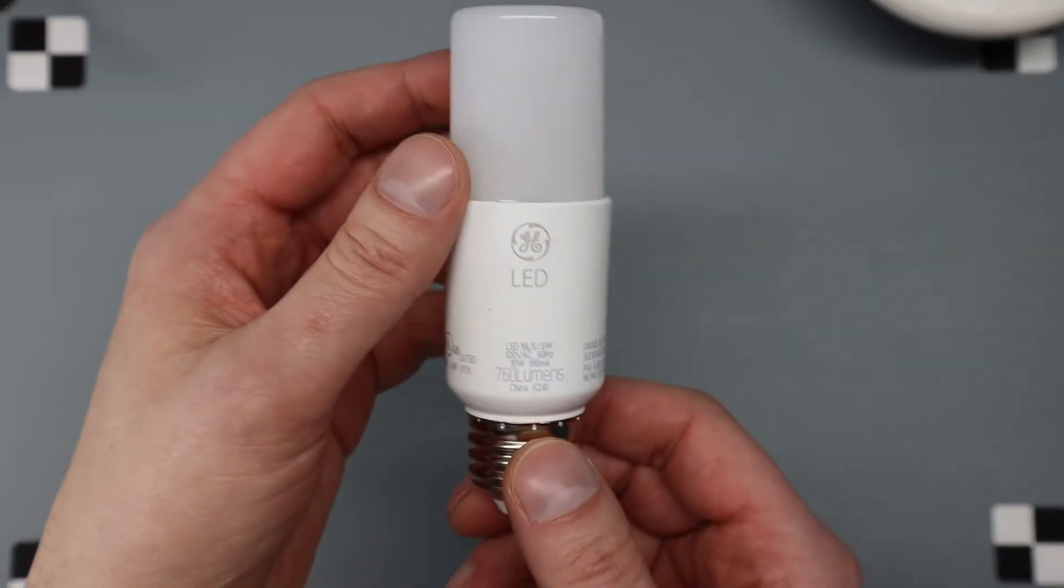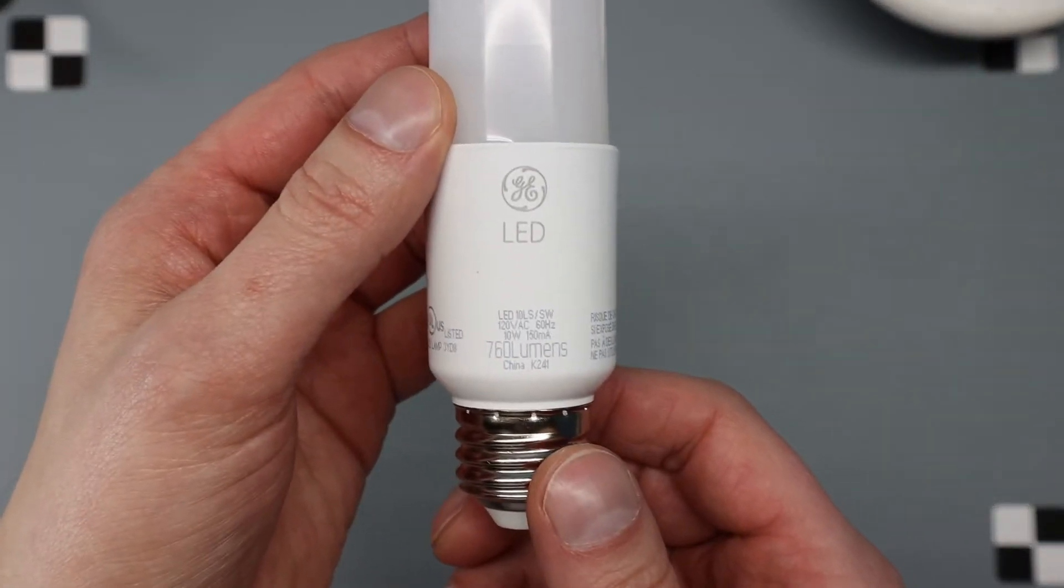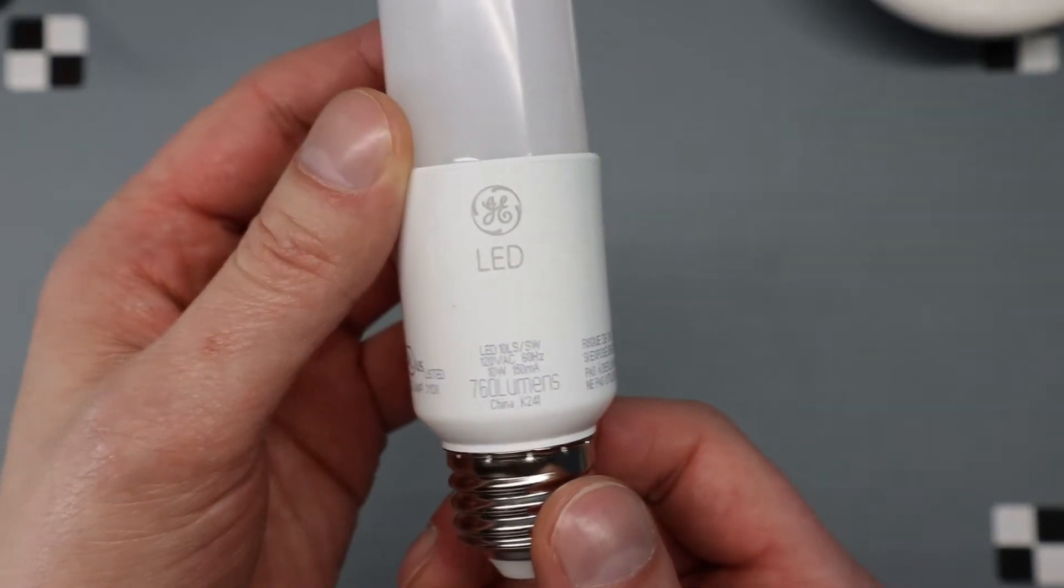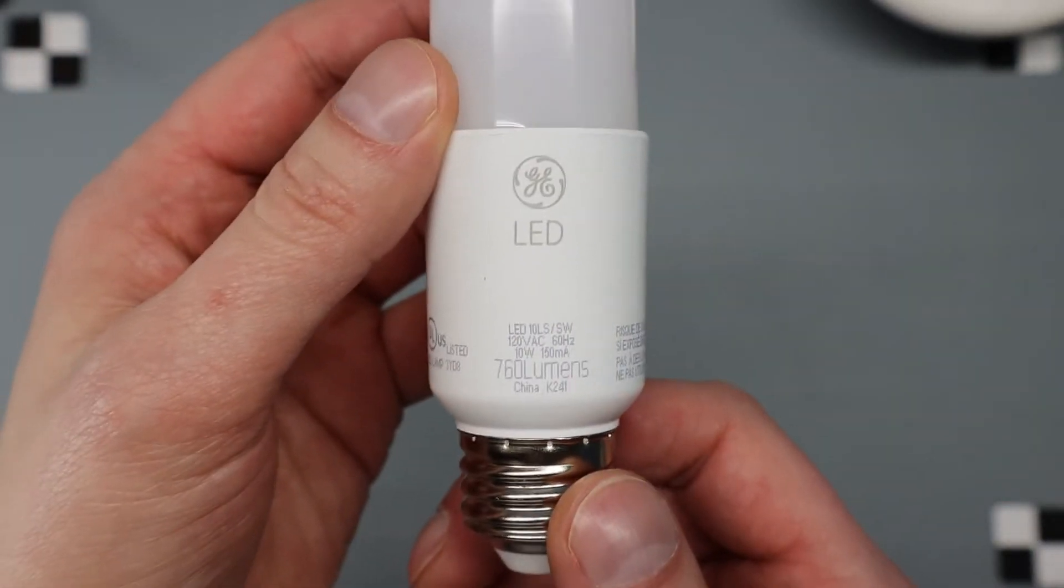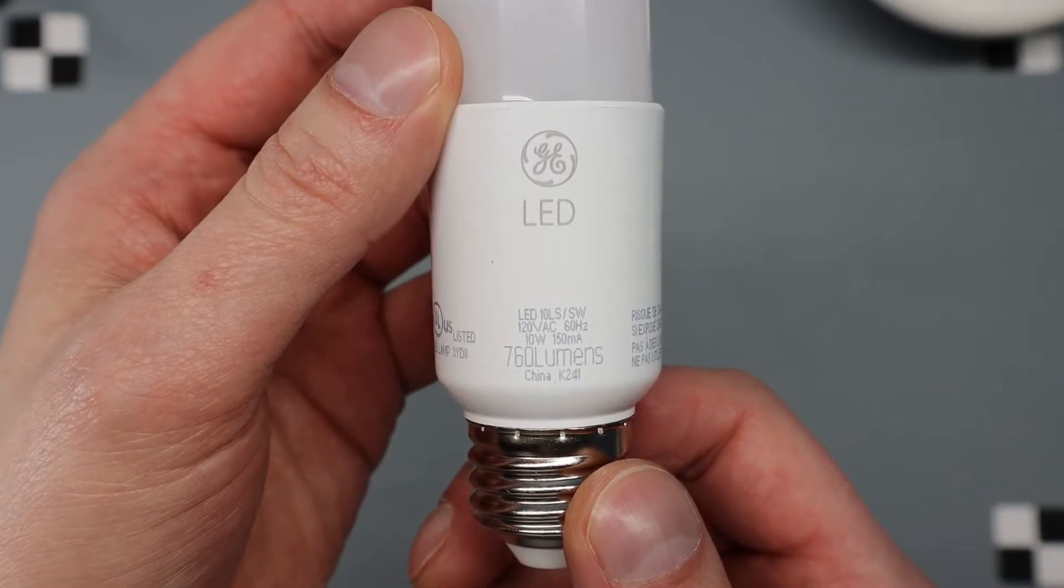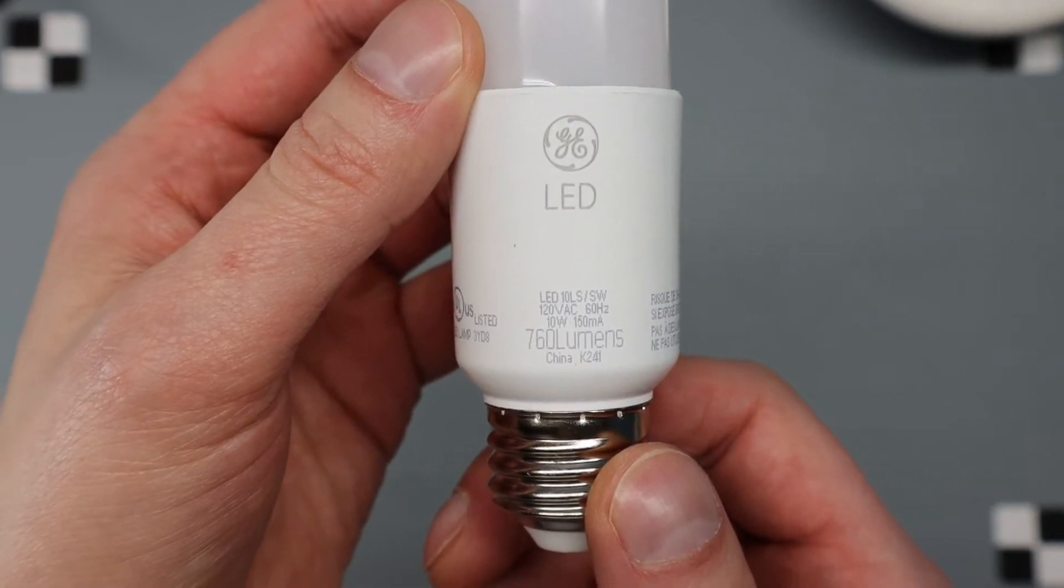All right, today I'm gonna look at this GE LED bulb. It's a 10LS SW 10 watt 150 milliamp 760 lumen.